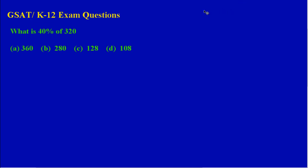Welcome to another lesson on GSAT past paper questions. In this lesson, we're asked to find 40% of 320. An easy way of looking at this is that the word 'of' means to multiply.